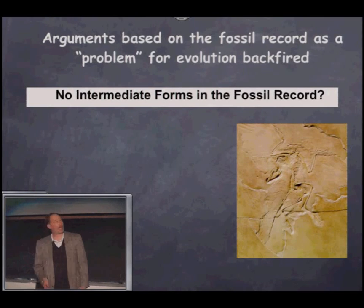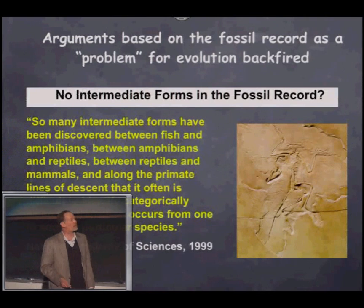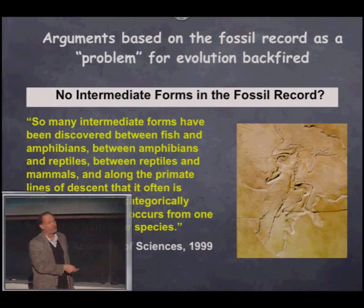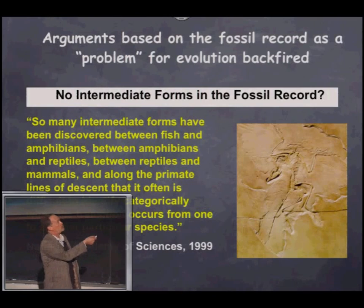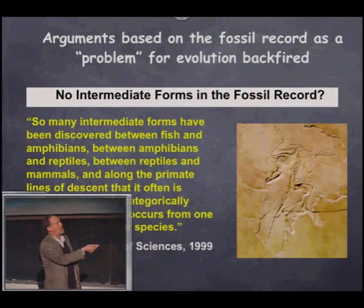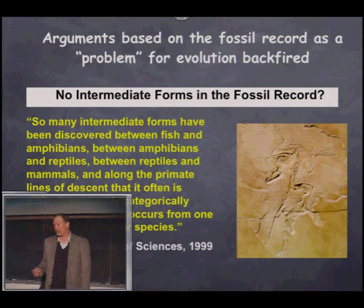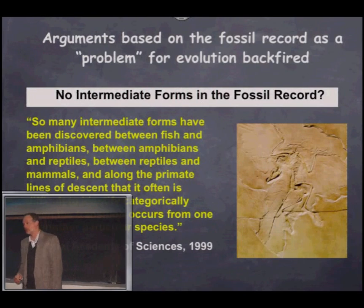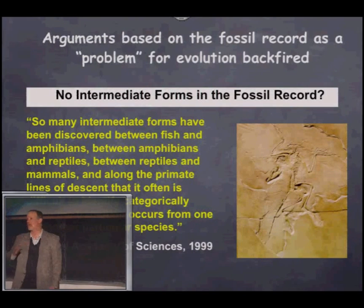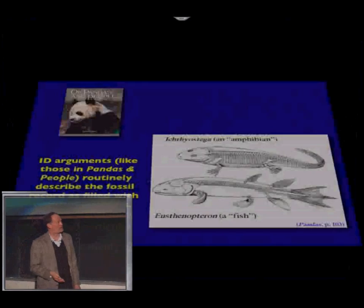One thing you'll hear from critics of evolution is that there are no intermediate or transitional forms in the fossil record. A couple of years ago, the National Academy of Sciences tried to put that argument to rest. They said there are so many intermediate forms between fish and amphibians, amphibians and reptiles, reptiles and mammals, and even along the primate line, that you often can't tell where the transition occurs from one species to another. That's the very definition of a transitional form.